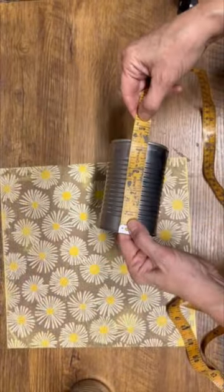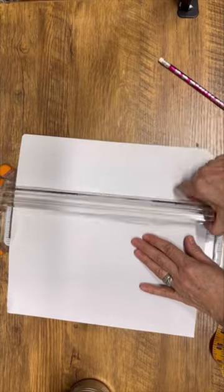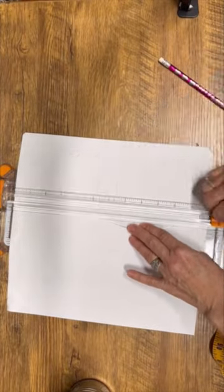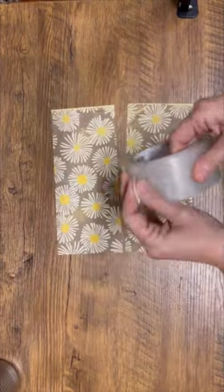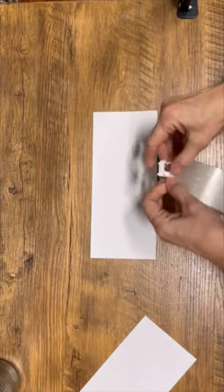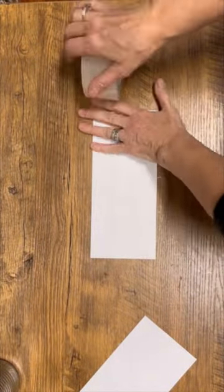I've got a tin can upcycle that you're going to love. I've got this scrapbooking paper that I think is going to look fabulous on these tin cans, but if you've ever tried to decoupage with scrapbooking paper, it's thick and hard to get to lay nice, so I have a little hack.